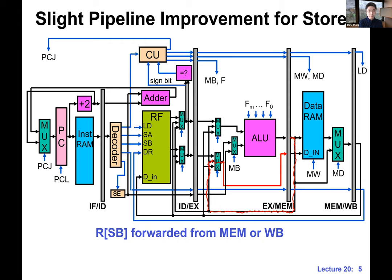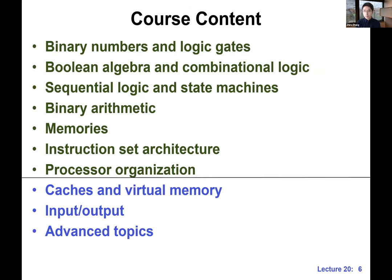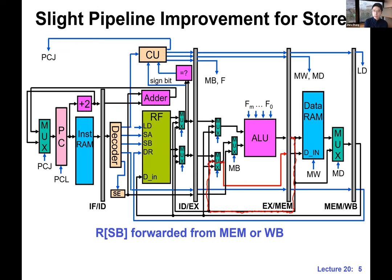There's a question asking what types of instructions need forwarding passes from MEM to EX. Review the slides — there are many, including R-type to R-type. For example, if you have an R-type instruction in the MEM stage producing a value for an R-type instruction in the EX stage — say an add and a sub that are data dependent — we can also do this kind of forwarding from MEM to EX.